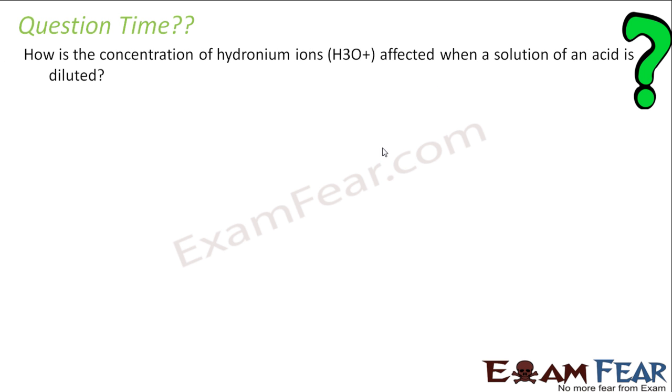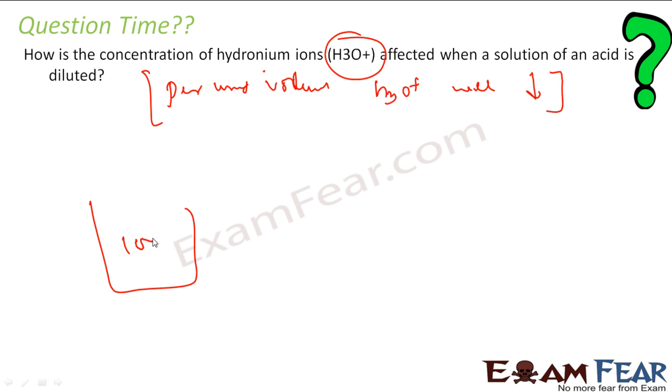How is the concentration of hydronium ions, H3O+, affected when a solution of an acid is diluted? Obviously it will be less. So you can say that per unit volume, H hydronium ions will decrease, but the total hydronium ion will be same. For example, let's suppose it has 100 hydronium ions, some acid you have taken. Now you are putting water in that.